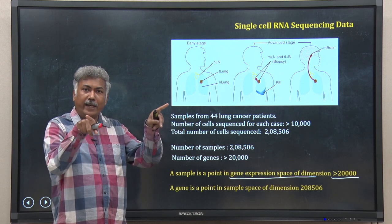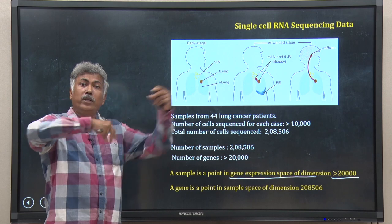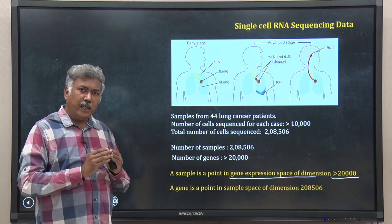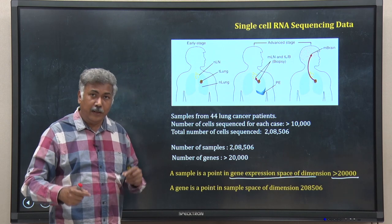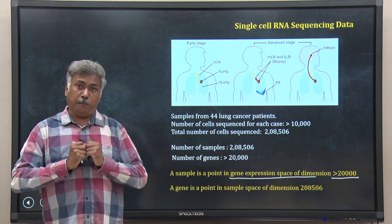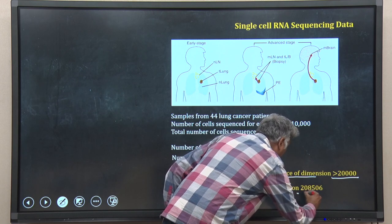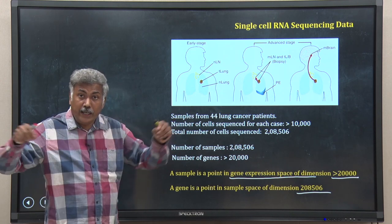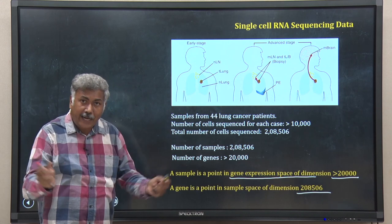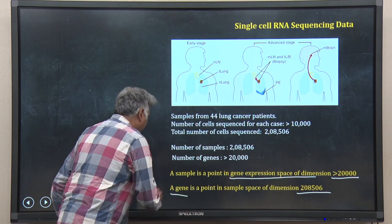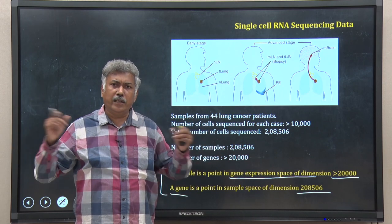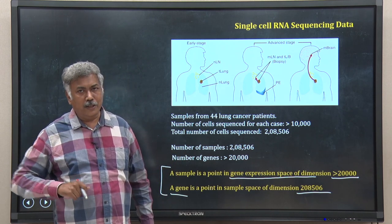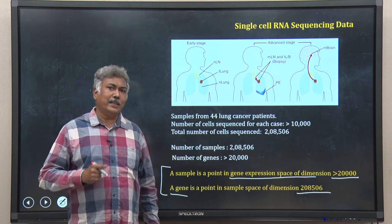In a two-dimensional gene expression experiment you have two coordinates — gene 1 and gene 2. Now you have more than 20,000 coordinates; it is a huge dimensional system. You can also invert it: consider samples as variables and ask about each gene's behavior across the sample space. Then the dimension becomes 208,506. Whatever way you look at this data, it is a hugely dimensional dataset and you cannot visualize or properly analyze it mathematically using conventional tools.